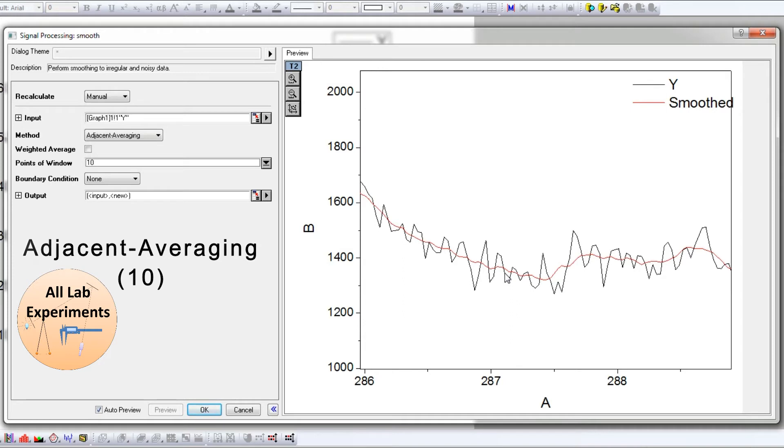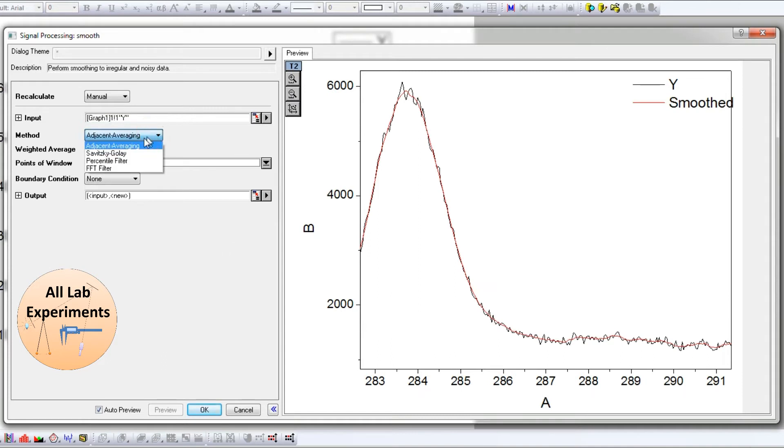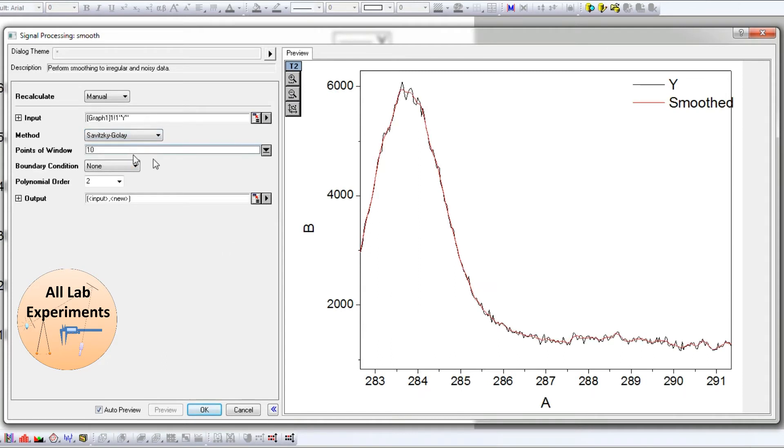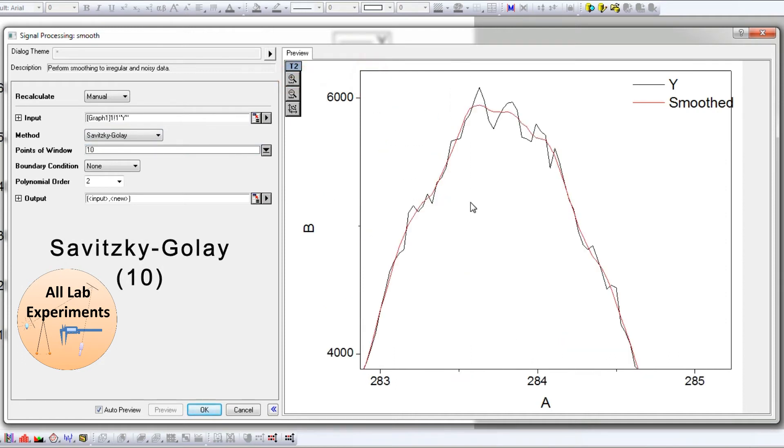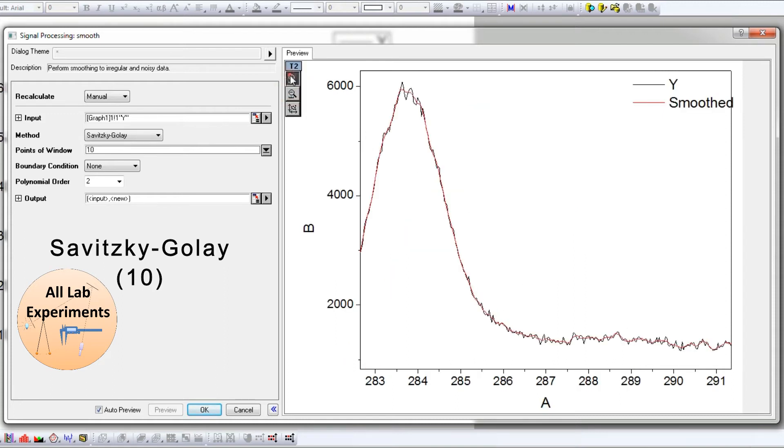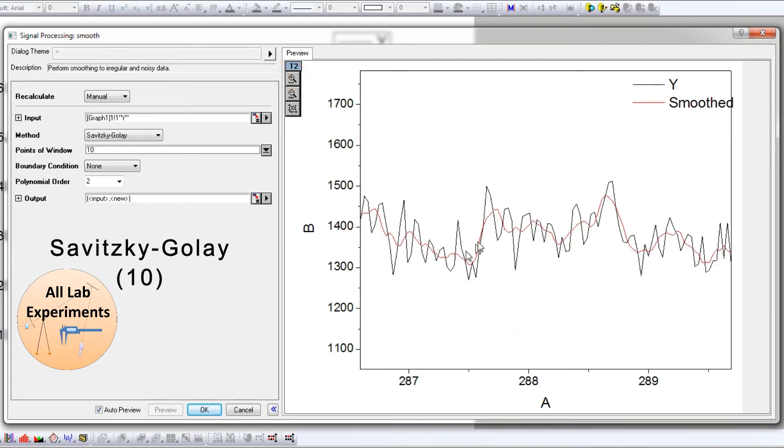In the second region the smoothness has also increased, so we have removed the local noise or any other kind of disturbances from the data. In case of Savitzky-Golay, we will find that this is also somewhat smooth, better than earlier, and the second part is also OK.